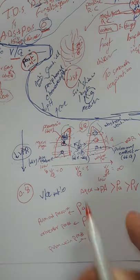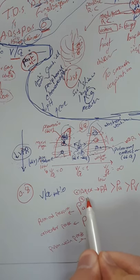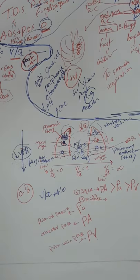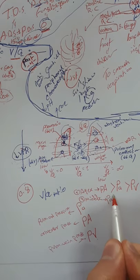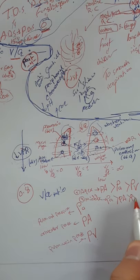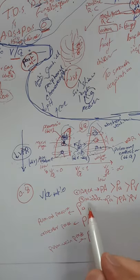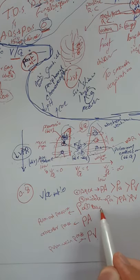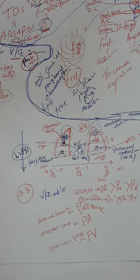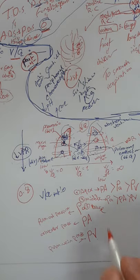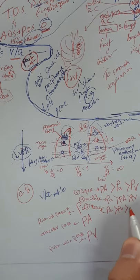In Zone 2 — the middle portion of the lung — the pulmonary artery pressure exceeds the alveolar pressure: Pa > PA > PV. Perfusion and ventilation are both good here. In Zone 3 — toward the base — alveolar pressure decreases and pulmonary blood flow increases as arterial pressure increases. In the lower portion of the lung, alveolar pressure is lowest: Pa > PV > PA (capital A).